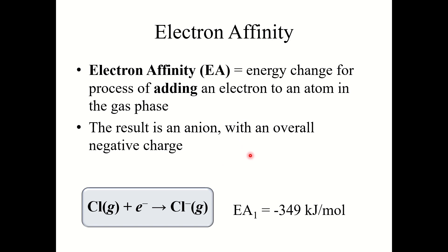Last trend: electron affinity. Electron affinity is the energy change for the process of adding an electron to an atom in the gas phase; the result is an anion with an overall negative charge. This is kind of the reverse of ionization energy — here we are adding an electron to produce an anion. Electron affinity values are sometimes negative; for example, chlorine plus an electron forms the chloride Cl⁻ anion with a negative electron affinity, because chlorine likes adding an electron — it gives off energy in this stabilizing process.